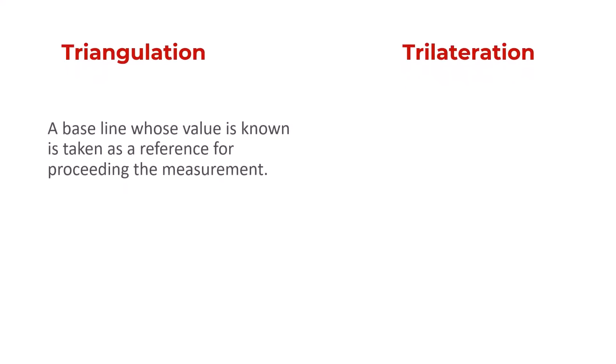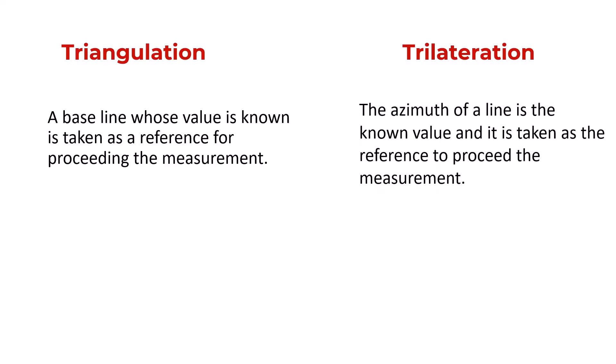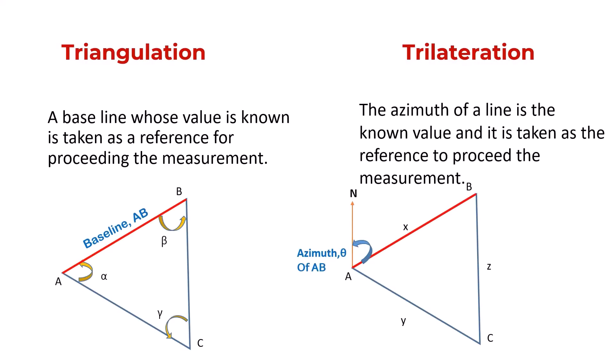In triangulation, a baseline whose value is already known is taken as the reference for proceeding the measurement. While in case of trilateration, a node line whose azimuth is determined as a reference to proceed the measurements.